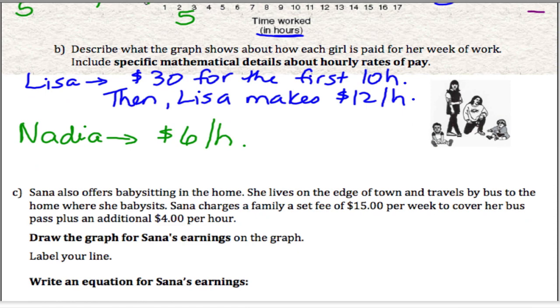She lives on the edge of town and travels by bus to the home where she babysits. She charges a set fee of $15 a week to cover her bus pass. So she has $15 a week, no matter what. And then however much she works, she charges $4 an hour.